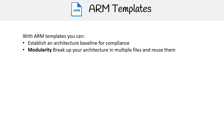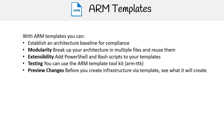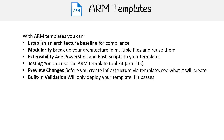Achieve modularity — break up your architecture into multiple files and reuse them. Ensure extensibility by adding PowerShell and Bash scripts to your templates. Test using the ARM template toolkit. Preview changes before you create infrastructure via a template to see what it will create. Built-in validation will only deploy your template if it passes.